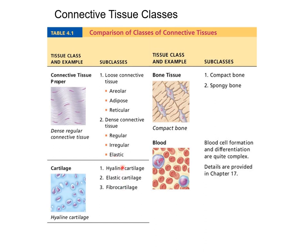There are three types of cartilage: hyaline, elastic, and fibrocartilage. Then you have bone and blood. So these are the types of connective tissue — the classes and the subclasses that we are going to go through.